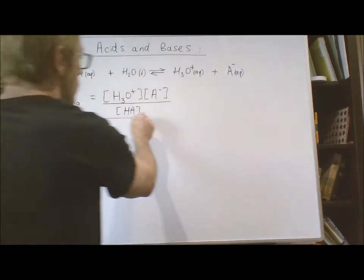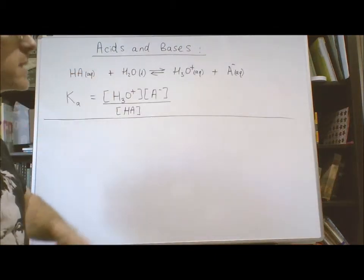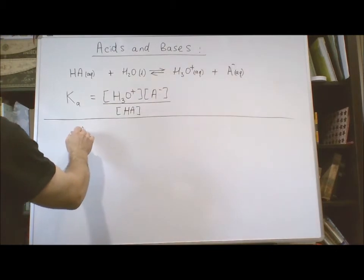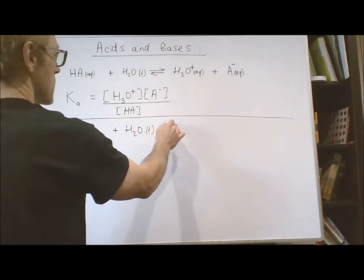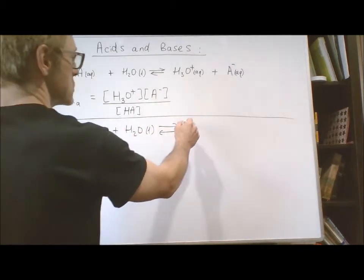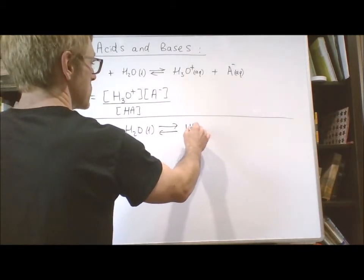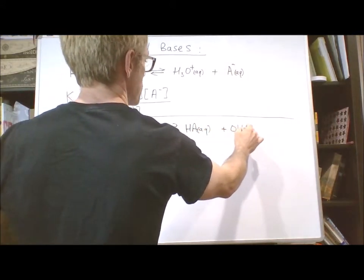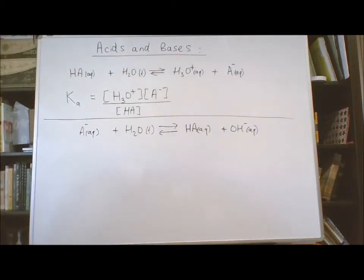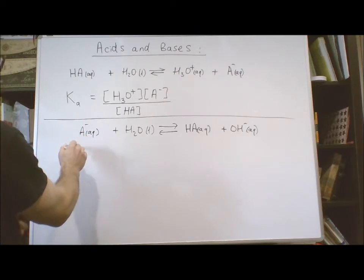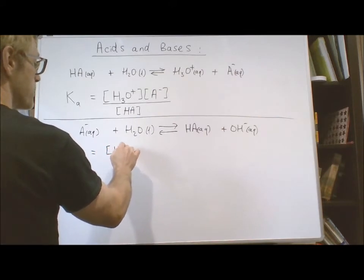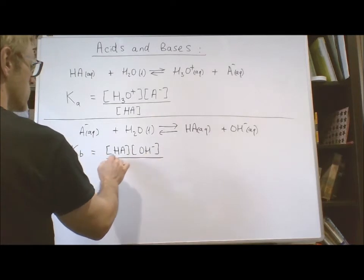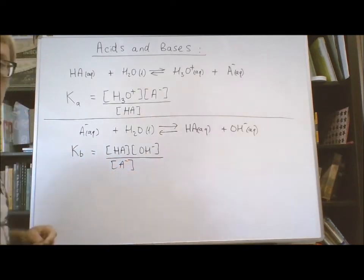Now let's write a general expression for a base — we'll use the conjugate base A⁻ as our subject. Putting A⁻ in water, it generates HA and OH⁻. The base dissociation constant Kb equals the product of the products over the reactant: Kb = [HA][OH⁻] / [A⁻]. Again, we ignore water because it is a liquid.